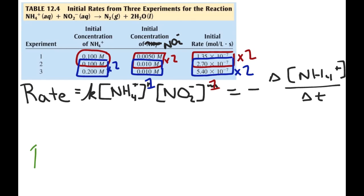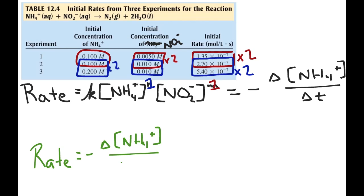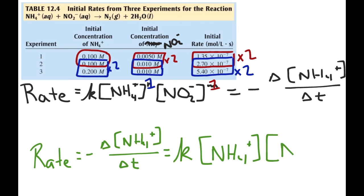We can then rewrite the entire rate law. The rate of the reaction — equal to the rate of disappearance of ammonium, that is the change in ammonium concentration over change in time — is equal to the rate constant K times the concentration of ammonium times the concentration of nitrite. This reaction is first order with respect to ammonium and first order with respect to nitrite. Adding those two exponents gives two, so this reaction is second order overall.